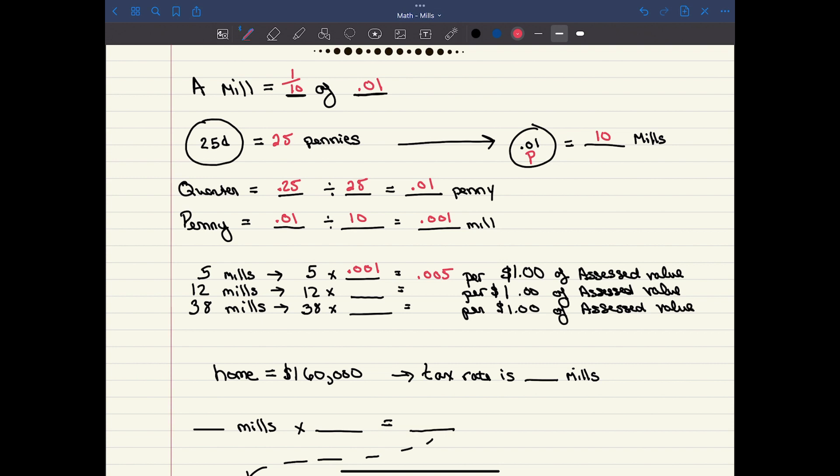Well, if a property has a tax rate of 12 mills, then they're going to pay 0.001 12 times for every $1 of the assessed value, meaning they're going to pay 0.012 for every $1 of the assessed value. And if somebody has a property with a tax rate of 38 mills, then they're going to pay 0.001 38 times for every $1 of the assessed value, and that's going to give us 0.038 that needs to be paid per $1 of the assessed value.